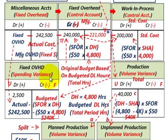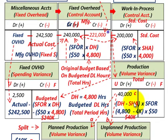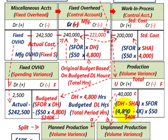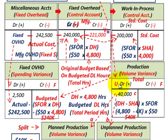Now for the production volume variance, we compare total denominator hours of 4,800 to the standard hours allowed of 4,000. There's a difference of 800 hours. Multiplying 800 hours by the standard fixed overhead rate of $50 gives us the production volume variance of $40,000 — unfavorable because total budgeted hours exceed standard hours allowed by 800.